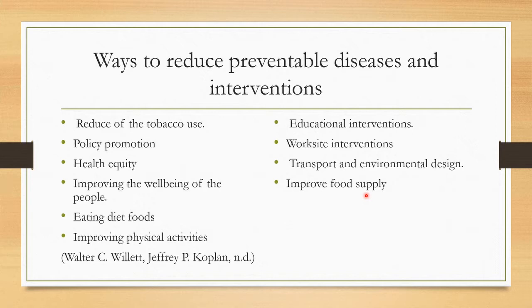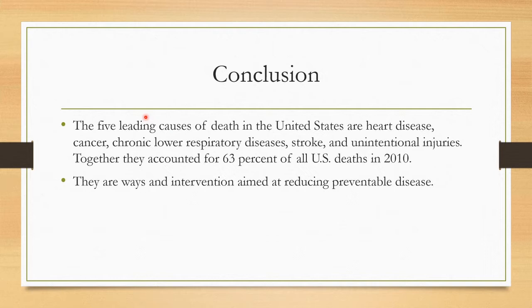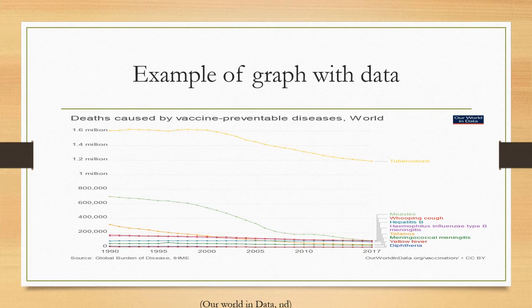Improving the food supply means ensuring people have access to healthy foods like fruits and vegetables. In conclusion, the five leading causes of death in the United States are heart disease, cancer, chronic lower respiratory diseases, stroke, and unintentional injuries. Together they account for 63 percent of deaths as of 2010 — a high number — and something must be done to reduce them. There are ways and interventions aimed at reducing these preventable diseases.